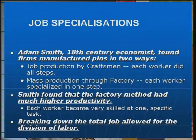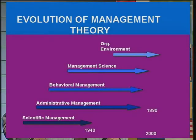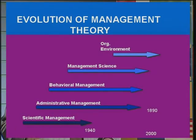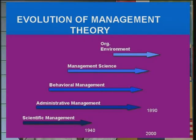Adam Smith was the first one who emphasized the division of labor, and later on Frederick W. Taylor and other thinkers started applying methods to production and business. In the 19th century, scientific management thinking developed through all these phases — from organizational environment to management science, then behavioral management and administrative management, and later culminated in scientific management.